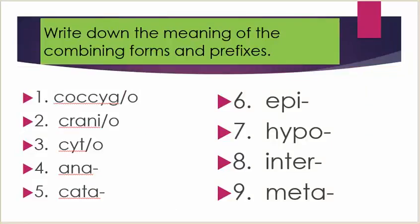Write down the meaning of the combining forms and prefixes. Number one: cosijo. Number two: cranio. Number three: cyto. Number four: ana. Number five: cata. Number six: epi. Number seven: hypo. Number eight: enter. Number nine: meta.